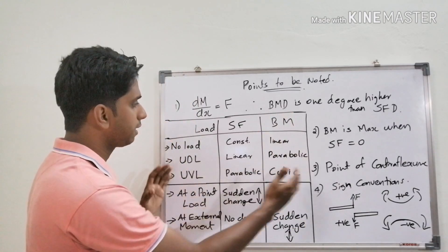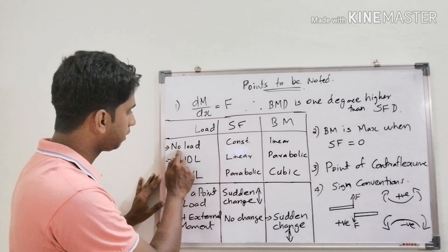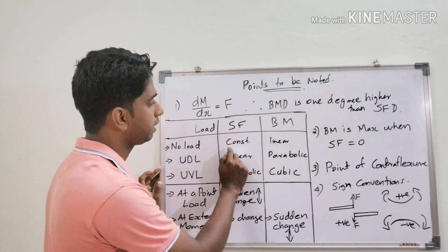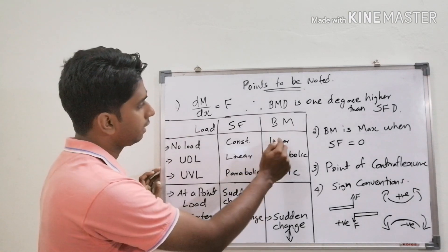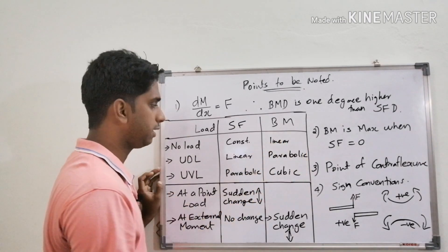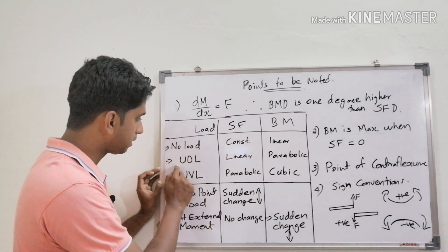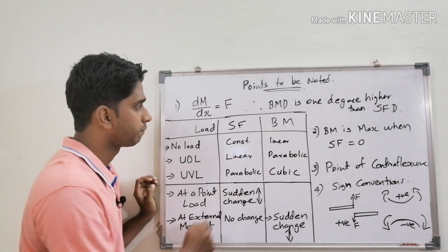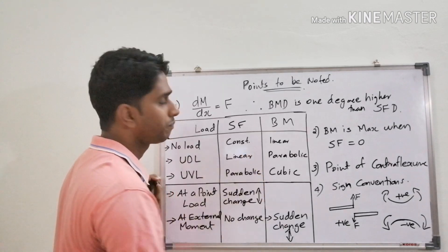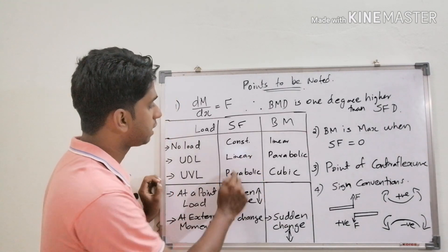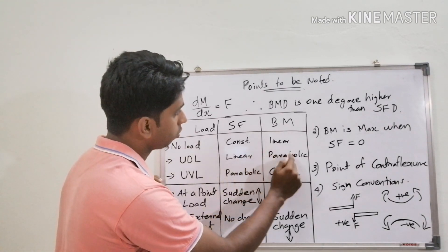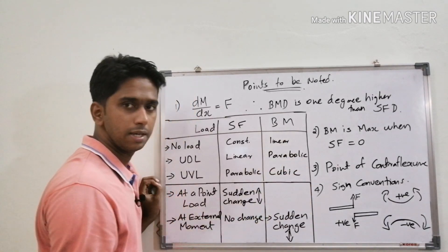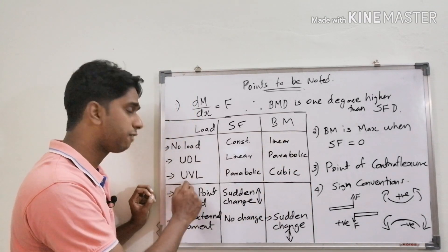If there is no load between two points, the shear force variation will be constant and the bending moment variation will be linear. If there is a uniformly distributed load (UDL) acting between two points, the variation in shear force diagram will be linear and in bending moment diagram the variation will be parabolic.